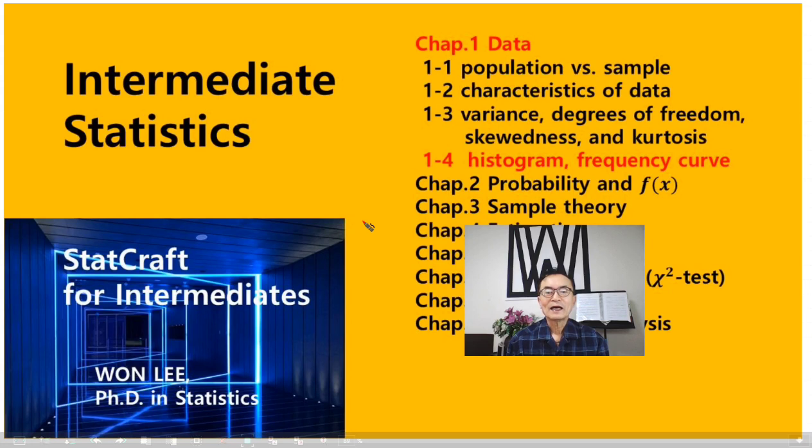I am going to talk about histogram and frequency curve. Today I have explained four characteristics of data: one is representative value, say mean or median; second, dispersion degree, variance and standard deviation; third, skewness; and fourth, kurtosis. These are four characteristics of data, but the first two, mean and variance, are most important.